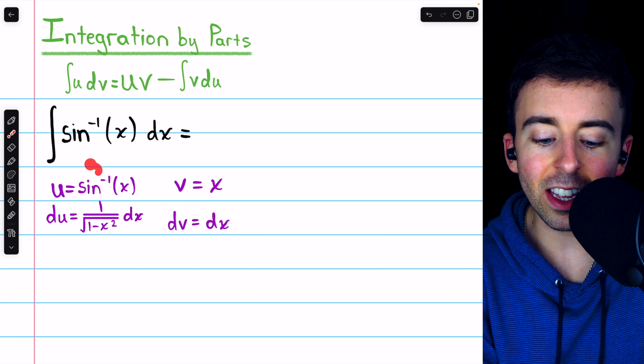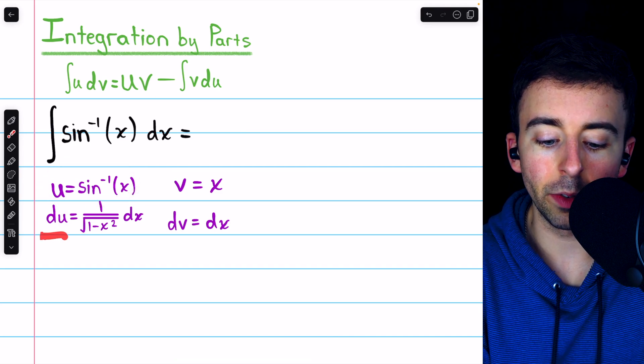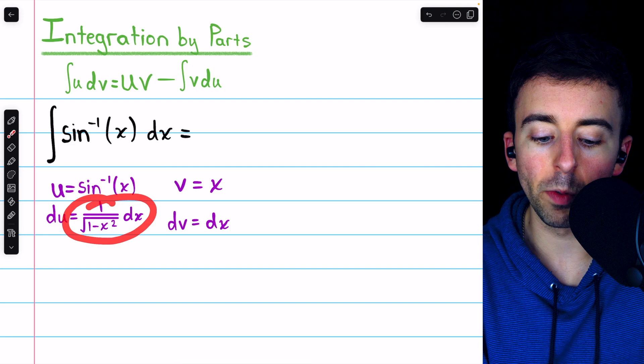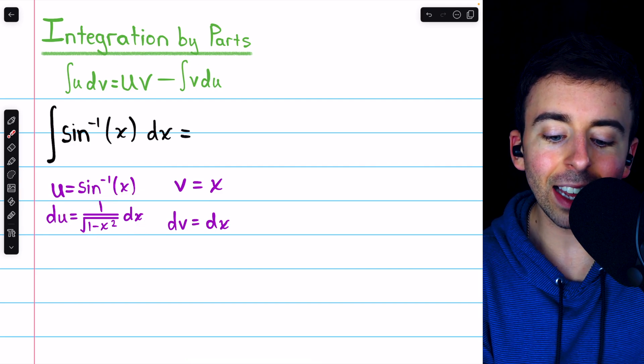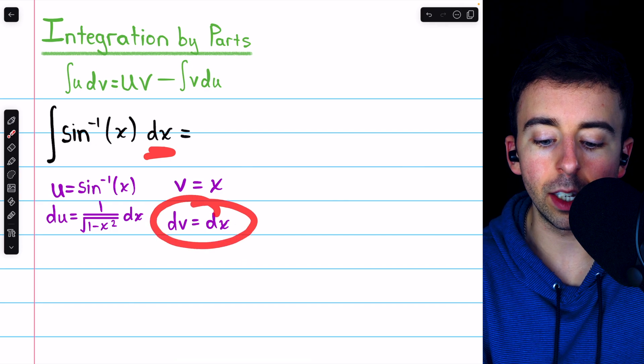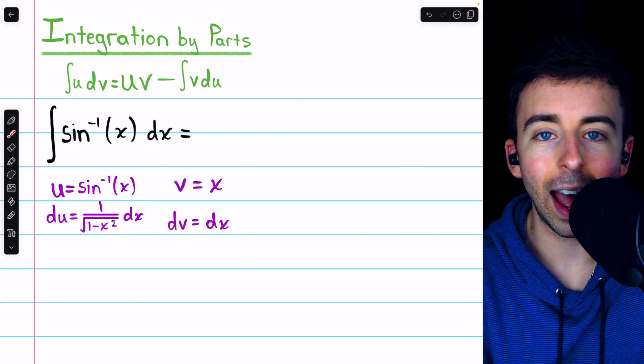So we'll have to let u be arc sine of x, and we do know how to differentiate that. The derivative of arc sine of x is 1 over the square root of 1 minus x squared, and that just leaves dx to be dv. We integrate both sides to get that v is equal to x.